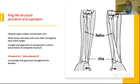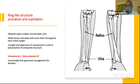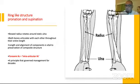Both bones articulate with each other throughout the entire length of both bones. Length and alignment of components is vital for preservation of the composite structure. So we can say forearm fractures are intra-articular fractures, and this is the principle that has governed management for decades.